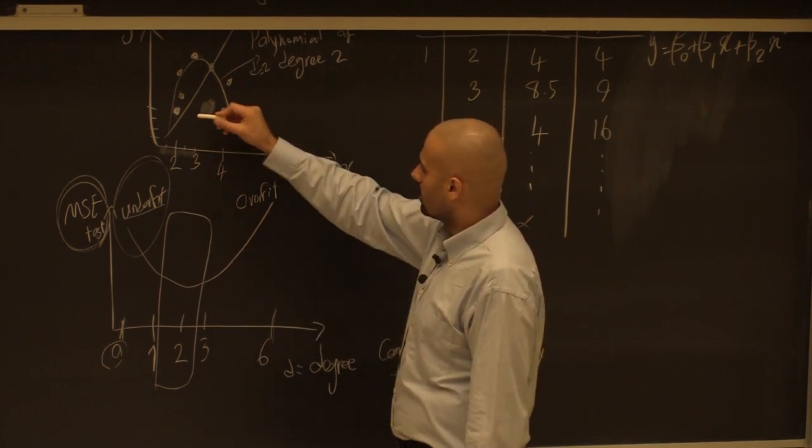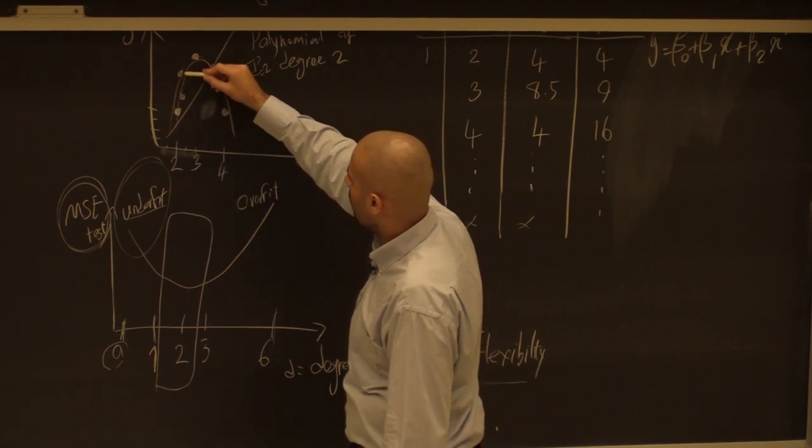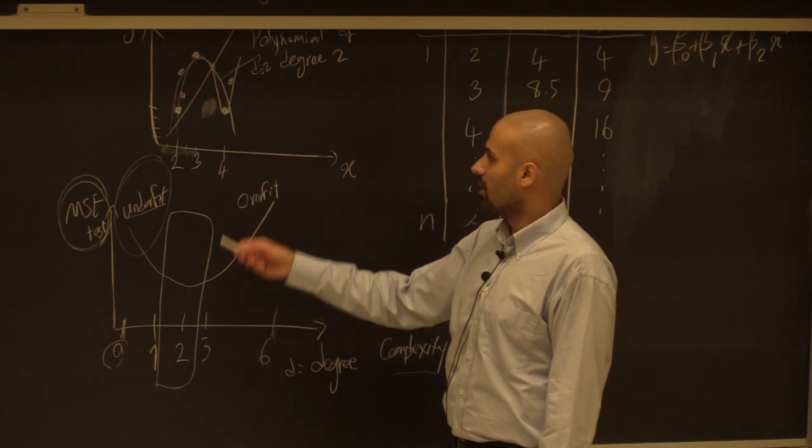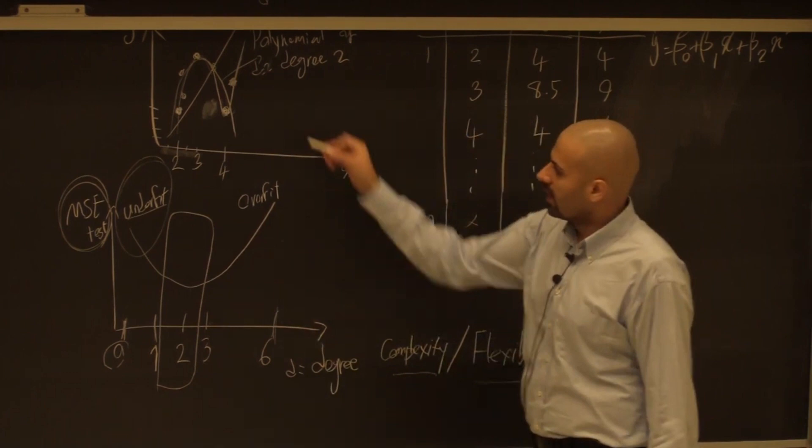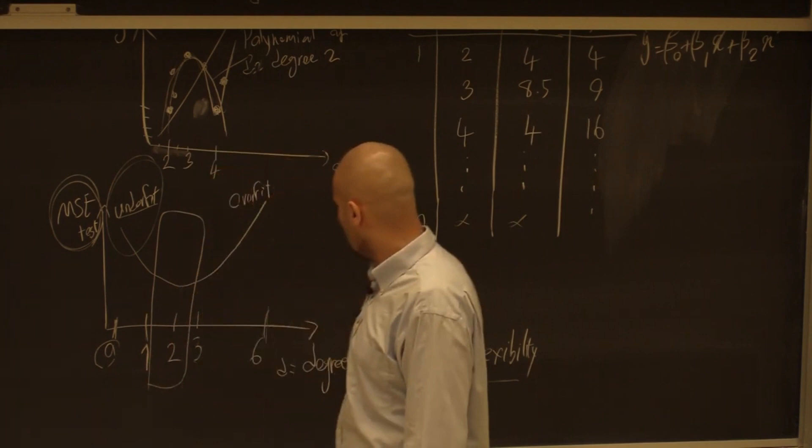With degree three, the model becomes too complex — it can change sign twice, so it might go up, come down, then go up again. When fit to the data, it may go up at the end just because of what's happening between two nearby data points, which doesn't make sense. That's why we are over-fit here.